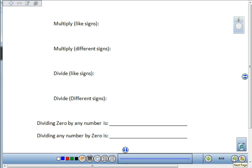Again, you're going to do the same with multiplying with like signs, multiplying with different signs, dividing with like signs, and dividing with different signs. Then I have two key questions that are really important: What happens when you divide zero by any number? What is your answer? And what happens if you take any number and divide it by zero?